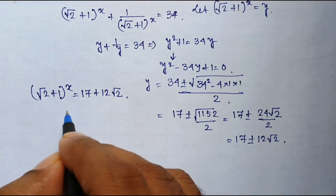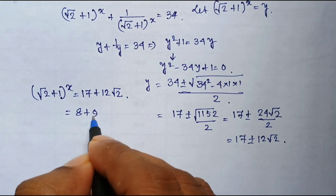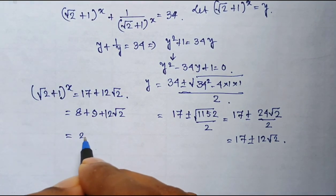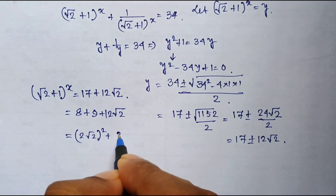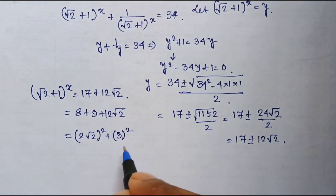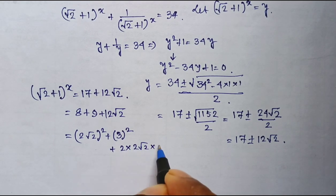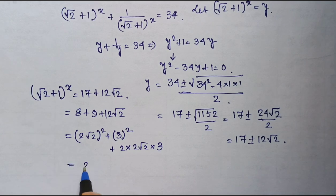Okay, I am writing this expression as 8 plus 9 plus 12 root 2. Why? Because it is 2 root 2 whole square, 9 can be written as 3 whole square, and 12 can be written as 2 into 2 root 2 into 3. So this is 2 root 2 plus 3 whole square.